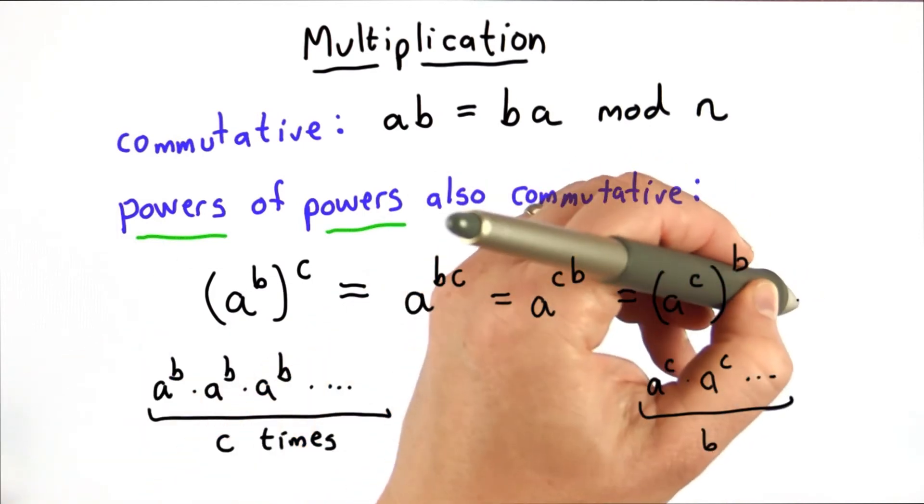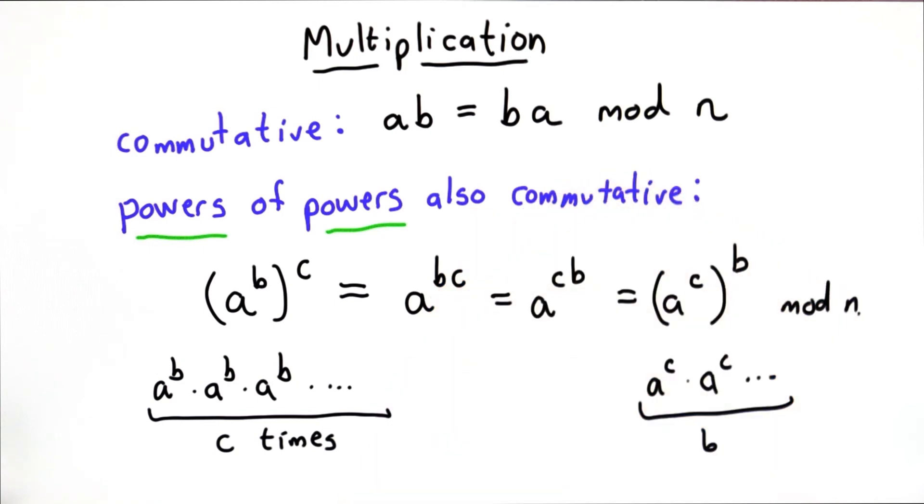And they're also equivalent with modular multiplication as well. So that's the main property that Diffie-Hellman key exchange takes advantage of. I'm going to show you the protocol next, and then we'll talk about why it's secure and some of the details in actually implementing it.